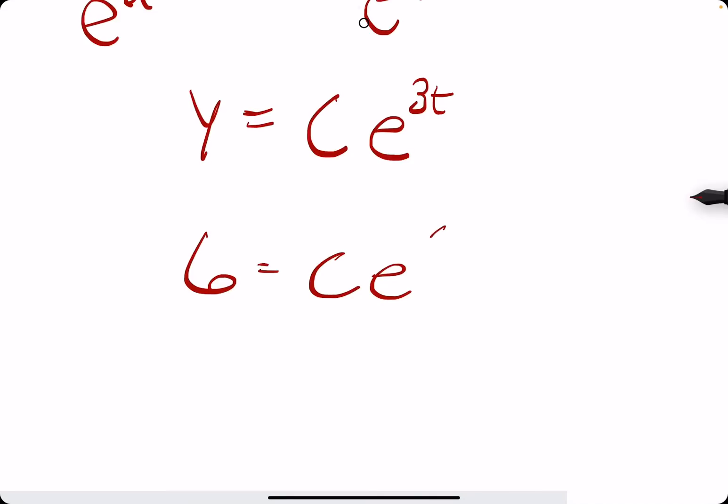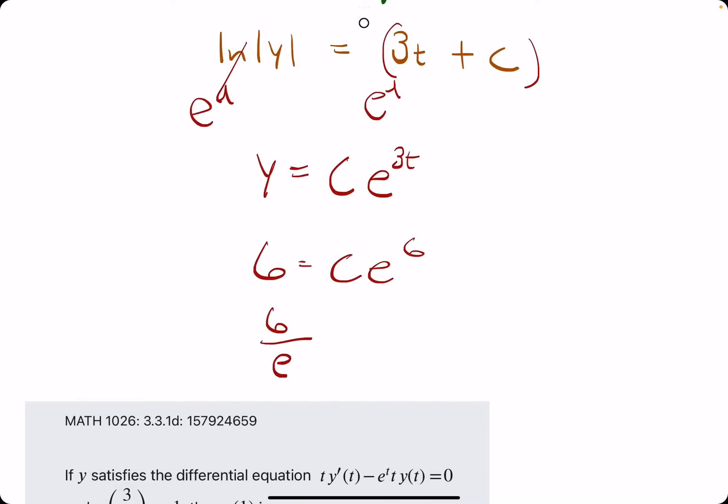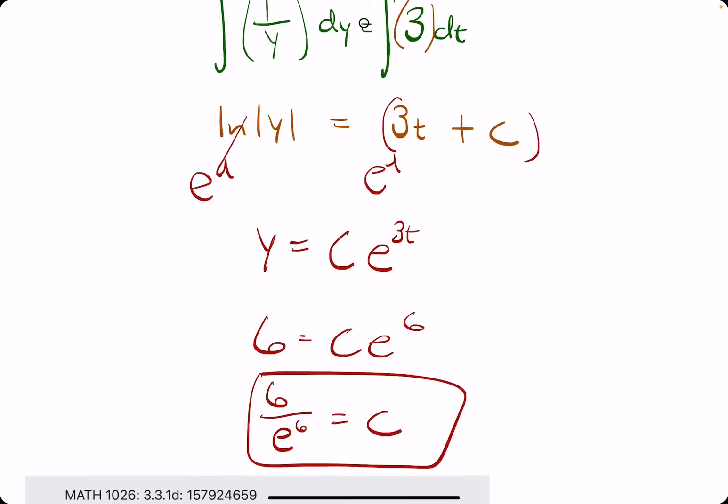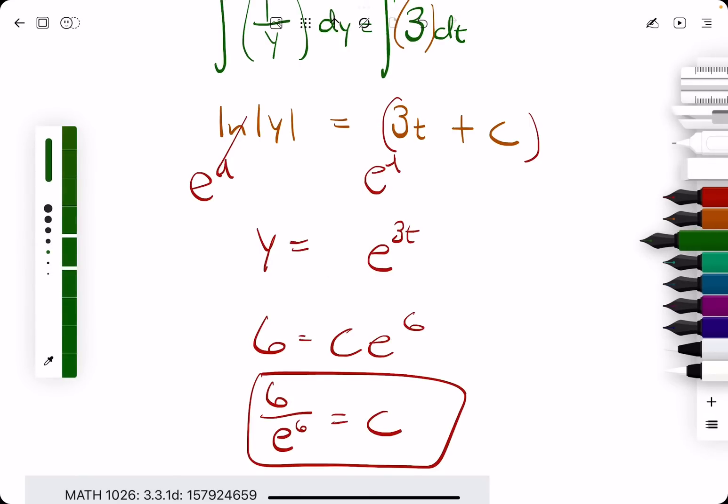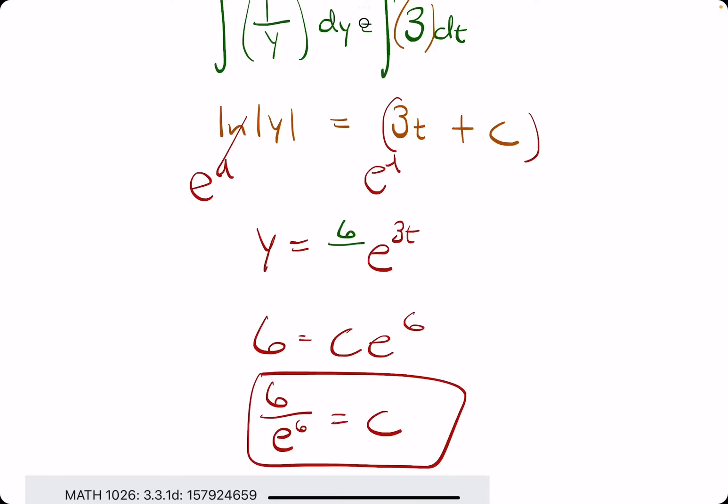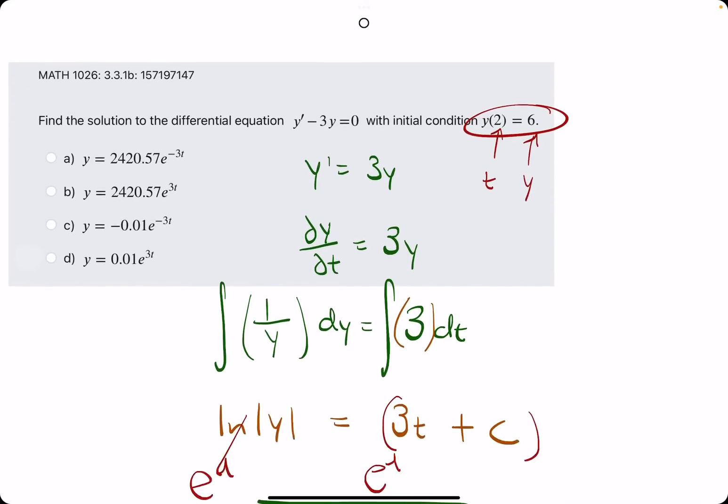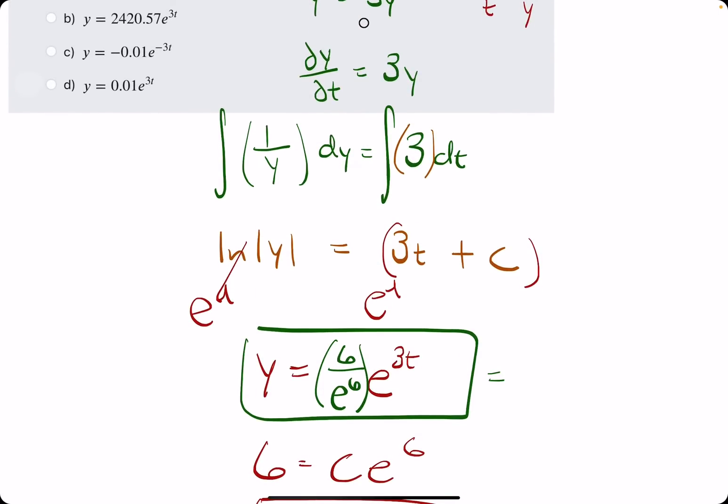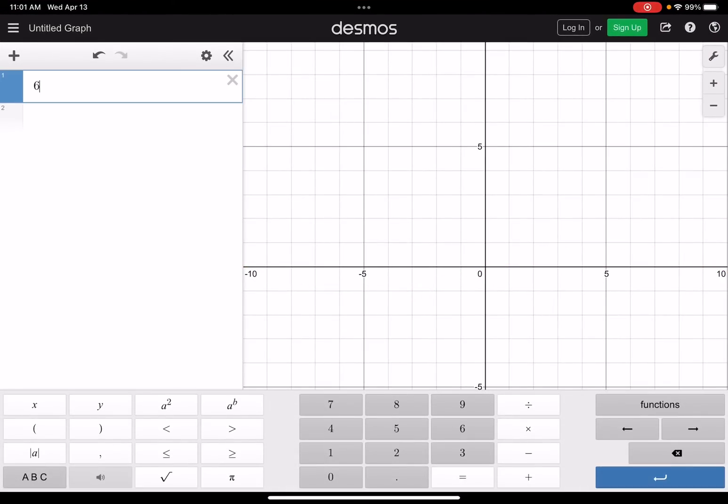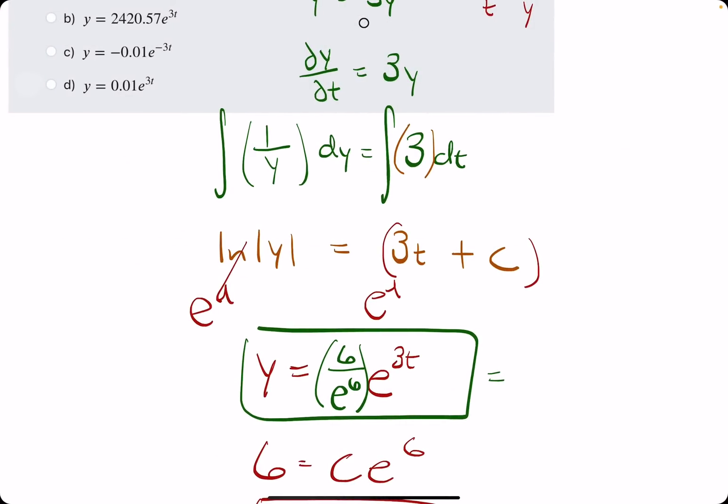And we'll skip right to calling y equals c e to the three t. Now using the initial condition y(2) = 6, we have 6 equals c e to the three times two, which is six. So if we solve for c, it would be six over e to the sixth. And so plugging that in to our general solution we found, six divided by e to the sixth. So 0.015 basically.